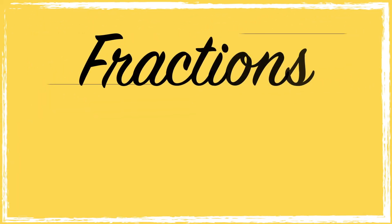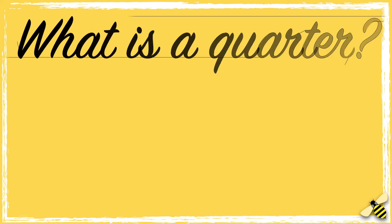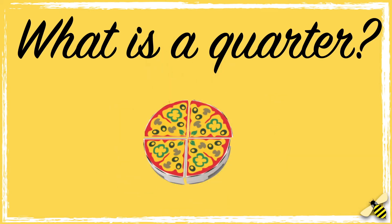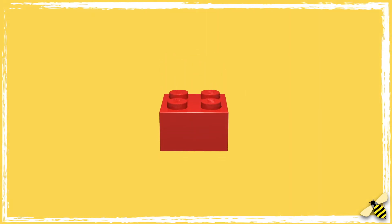In today's video we're going to learn about quarters. So what is a quarter? A quarter is where something is split equally into four parts. Think of a pizza being shared between four friends. Let's take a look at a Lego brick. This is one whole piece. We already know that if we split it in half, we split it into two parts. But if we split it into four equal parts, each part becomes a quarter.